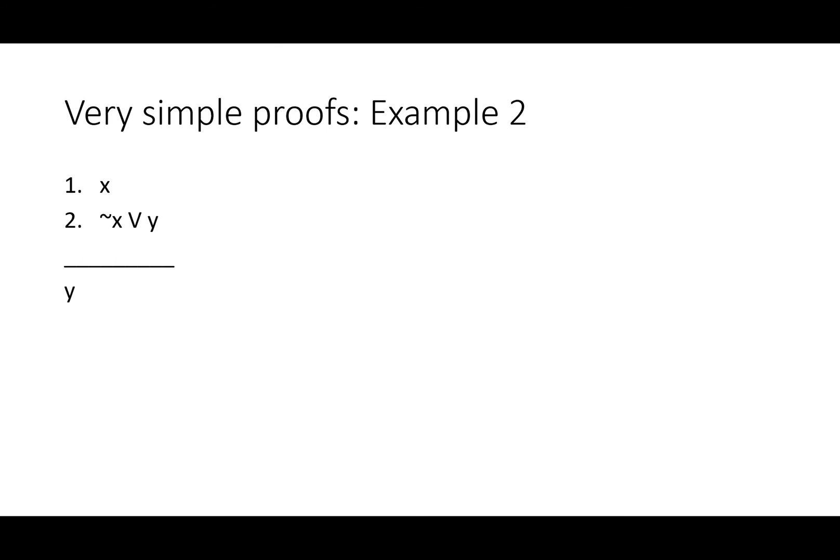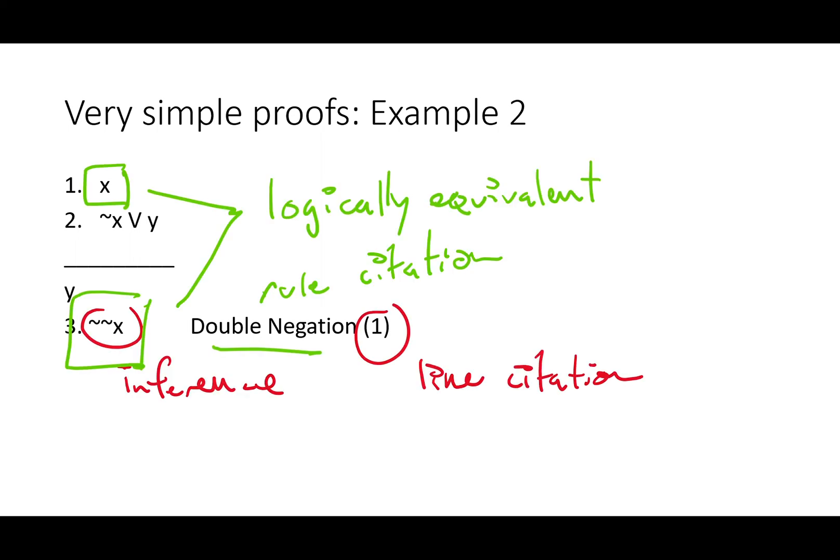Let's take another look at another example that uses a slightly different kind of rule. Once again, here's our premises and conclusion. They're given to us. In line three, we have this odd looking thing, not not x. Well, let's see the parts of it. That's our inference, not not x. Our line citation is just one line, line one.